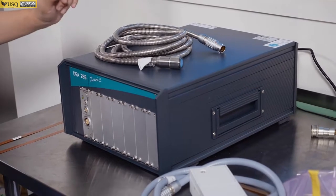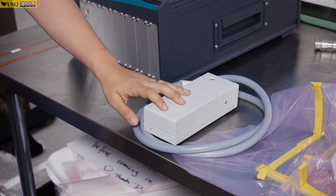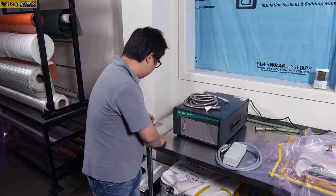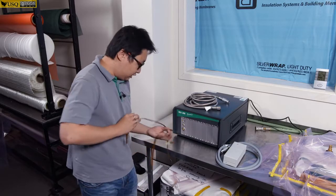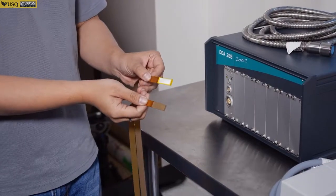Second, we have another one we call a disposable sensor, which looks like something like this.